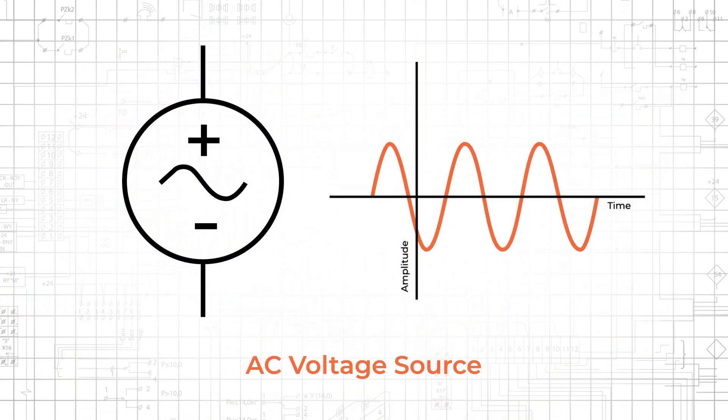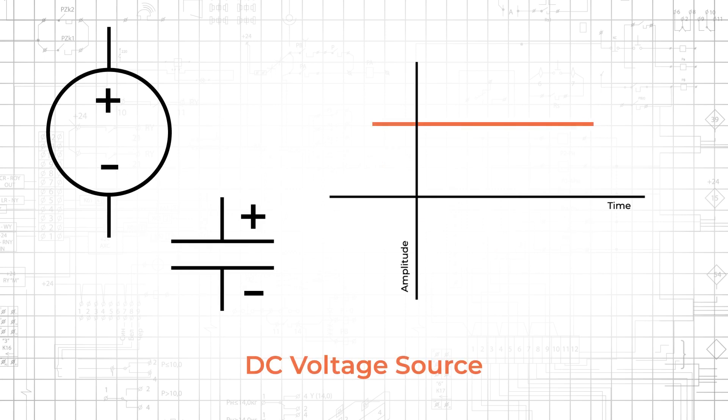Generators are AC sources. They produce sinusoidal voltages that periodically vary between positive polarity and negative polarity. Batteries create a static potential difference between the two terminals, and consequently, they are DC sources.